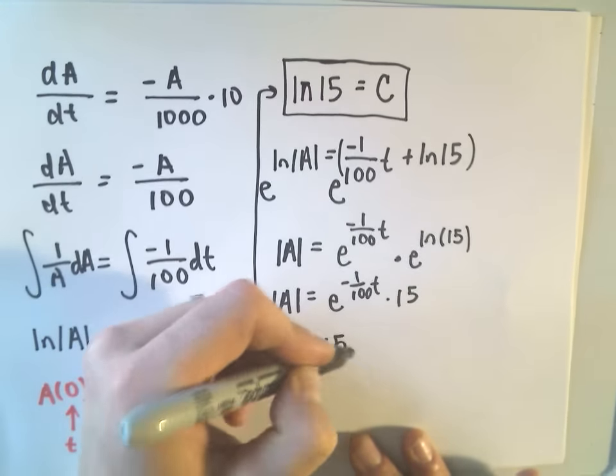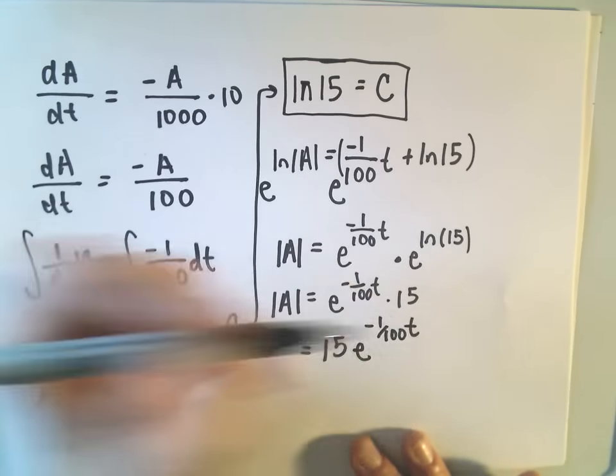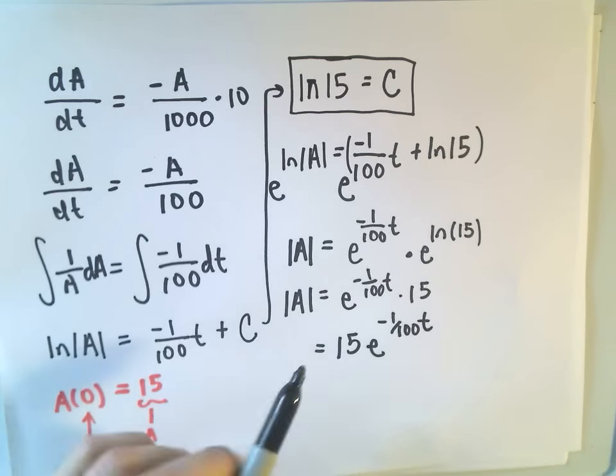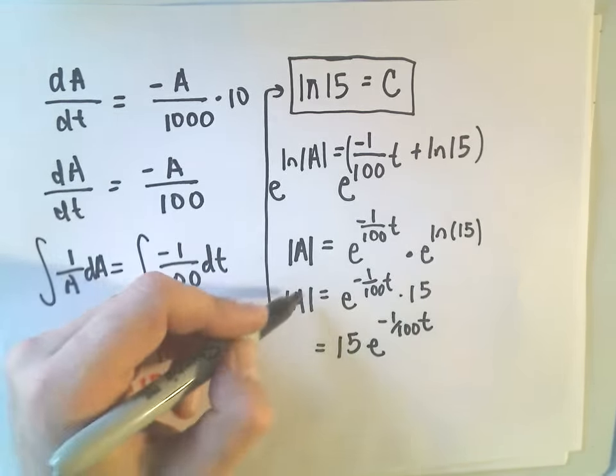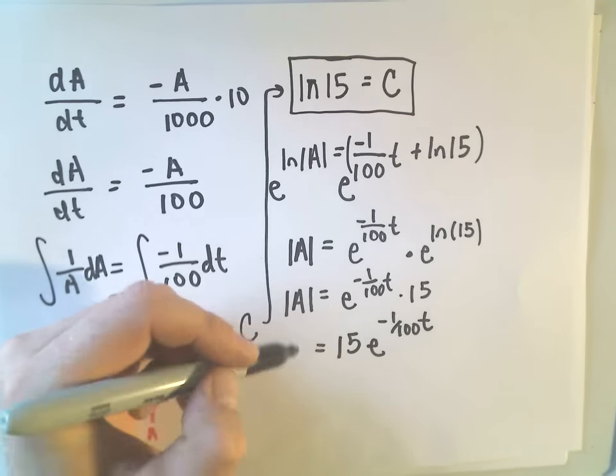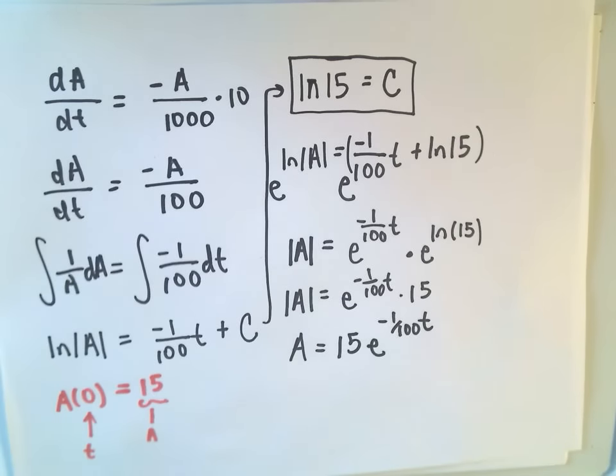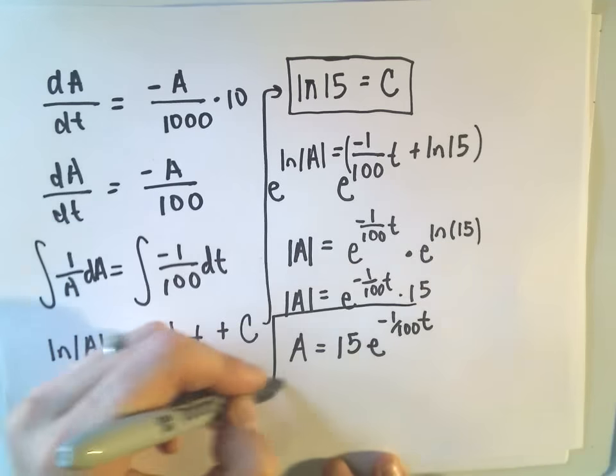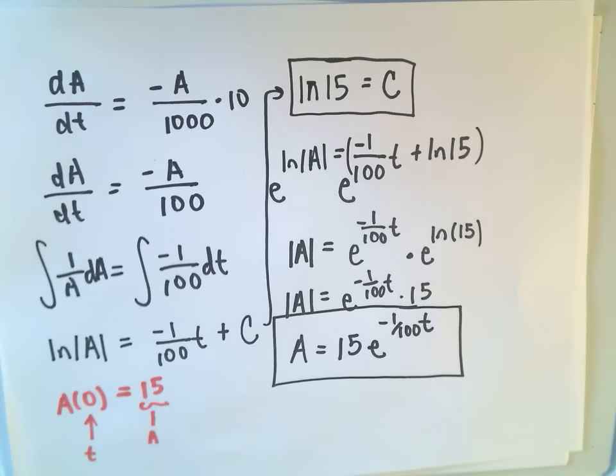And so on the right side, we've got 15 e to the negative 1 over 100 t. And since the initial amount is positive, the right side is always positive. We can conclude that the amount is always positive, that a is always positive. So we're left with our formula here. A equals 15 times e to the negative 1 over 100 t.